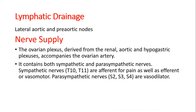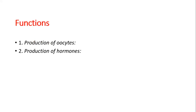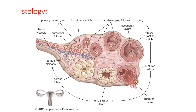Lymphatic drainage goes to the lateral aortic and pre-aortic lymph nodes. Nerve supply comes from the ovarian nerve plexus derived from the renal, aortic, and hypogastric plexuses, accompanying the ovarian artery. It contains both sympathetic nerves (derived from T10 to T12, afferent for pain and vasomotor) and parasympathetic nerves (derived from S2, S3, S4, vasodilator). Functions are production of oocytes and production of hormones.